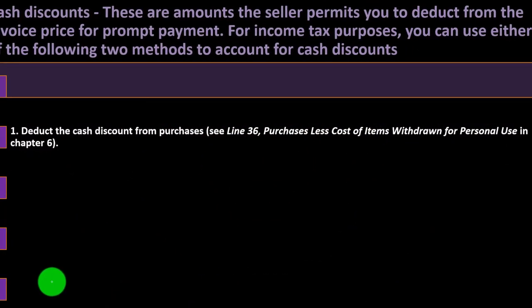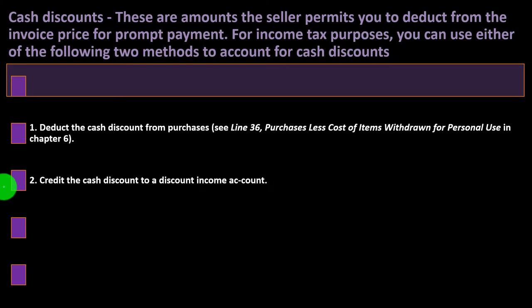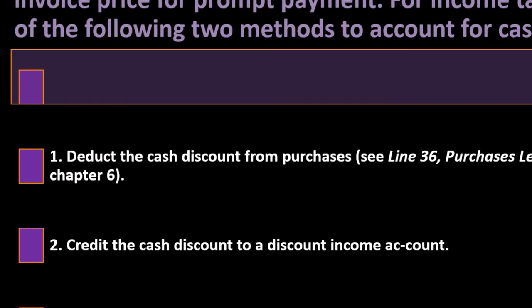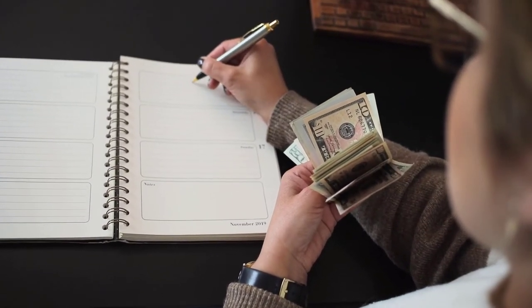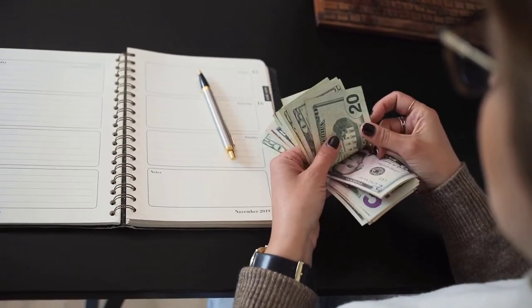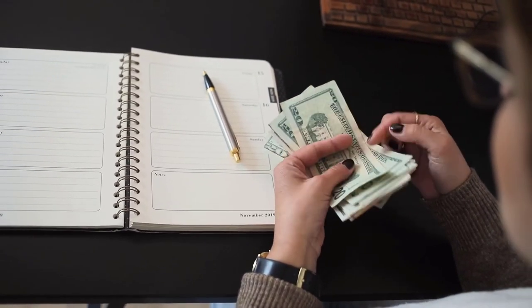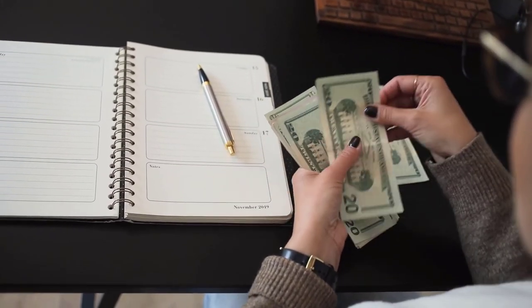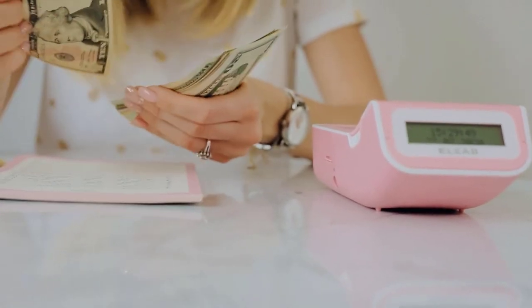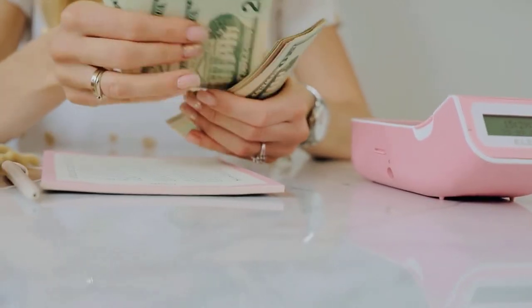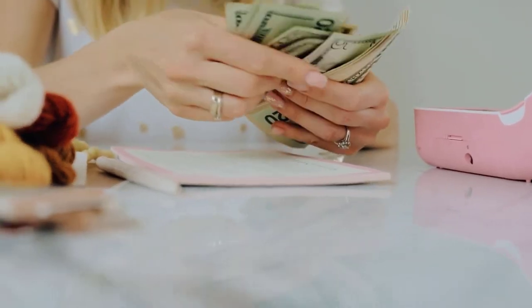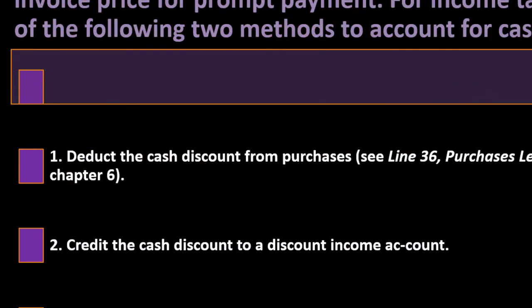Method one: deduct the cash discount from purchases (see Line 36, Purchases less cost of items withdrawn for personal use, covered in Chapter 6 on cost of goods sold). Method two: credit the cash discount to a discount income account. When you purchase inventory and later receive a discount within the discount period, you must decide whether to adjust the inventory item or record the discount as income.